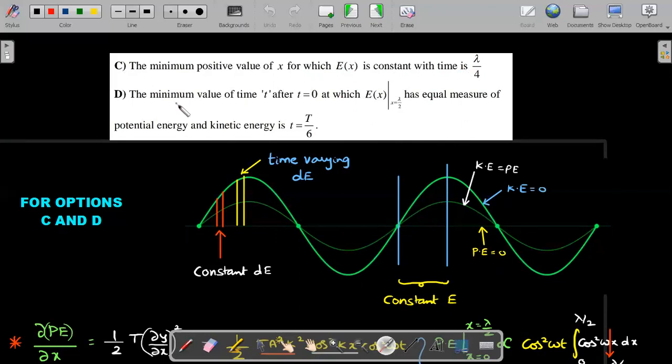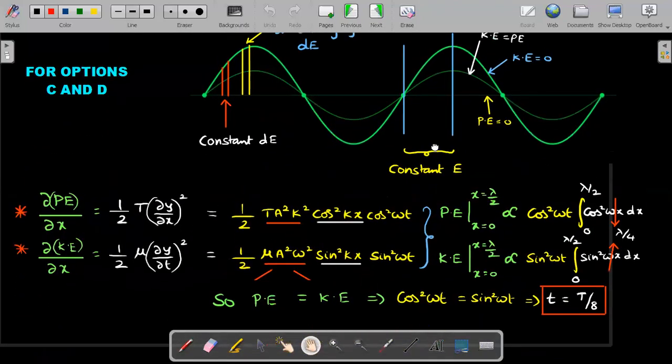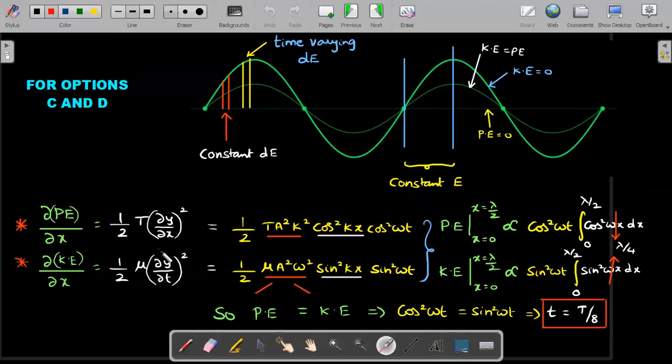Option D: minimum value of time after t equals zero—t equals zero was this, after some time you have to wait—where you find the entire energy has equal measure of P and KE. There's some position where KE and PE will be equal. We're searching for that position, meaning at what time that photograph will come.